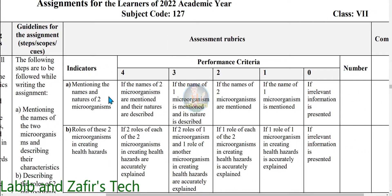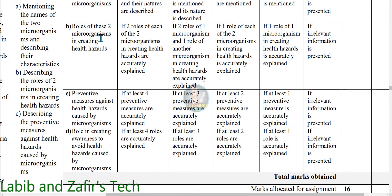For question A — mentioning the names and natures of two microorganisms — for four marks, if the names of two microorganisms are mentioned and their natures are described. For three marks, if only one is mentioned and its nature is described. For two marks, if only the names are mentioned. For one mark, if only one name is mentioned. For question B — roles of these two microorganisms in creating health hazards — this is also a four marks question. For four marks, if two roles of each of the two microorganisms in creating health hazards are accurately explained. For three marks, if two roles of one microorganism and one role of another are accurately explained. For two marks, if one role of each of the two microorganisms is accurately explained. For one mark, if one role of one microorganism is accurately explained.